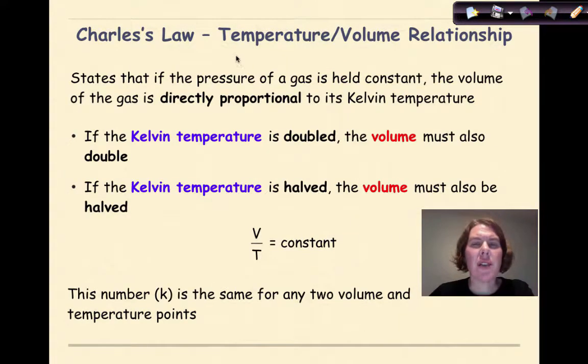So Charles Law is a temperature and volume relationship. It states that if the pressure of the gas is held constant, the volume of the gas is directly proportional to its Kelvin temperature. And one of the key things that you need to remember here is that if you're given a problem whose temperature is in degrees Celsius, you want to convert that into Kelvin before you do anything.